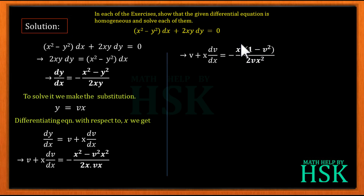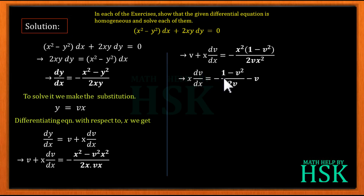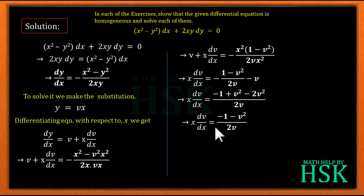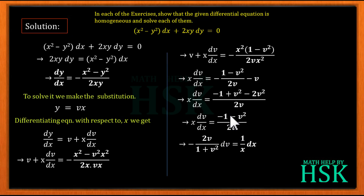In the numerator we take x² common, and in the denominator we write 2vx². The two x² terms cancel, giving x·dv/dx equal to minus (1 minus v²) upon 2v, minus v. Simplifying the right-hand side, we get x·dv/dx equal to minus (1 plus v²) upon 2v. Here the variables are now separated.